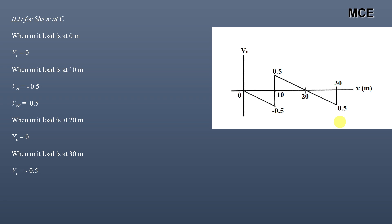This is how you draw the influence line diagram for any function — moment, shear, or reaction. Simply place the unit load at different positions along the beam and solve for that function at each position. I hope this solution video was clear and effective. I will be making more videos on influence line diagrams using the Müller-Breslau principle, so stay tuned and thanks for watching.